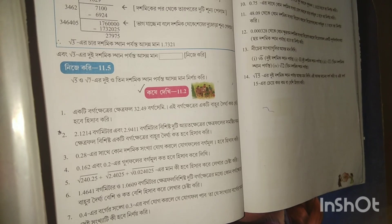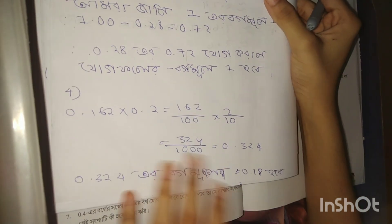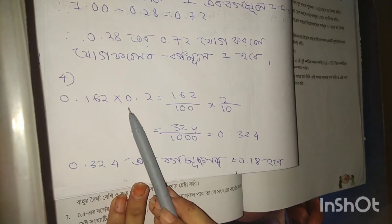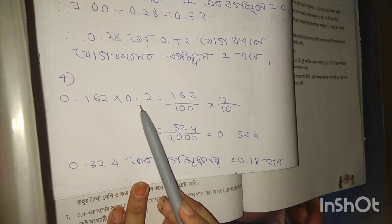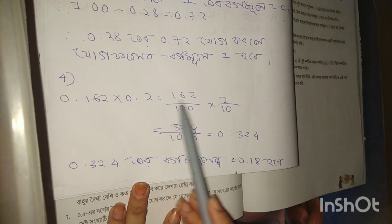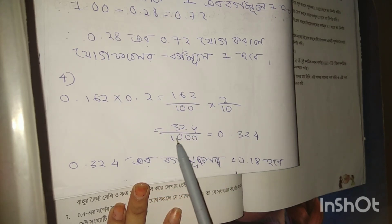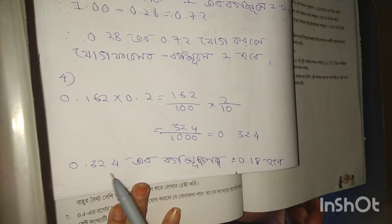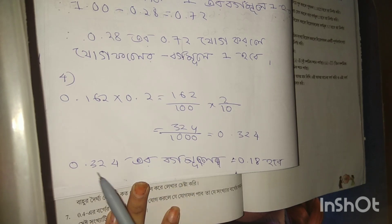0.162 or 0.2 is the add. 1.00 minus 0.162. 0.2 equals 162 by 100 and 2 by 10. 324 is the add. 1.00 minus 0.324. 0.324 is the add.